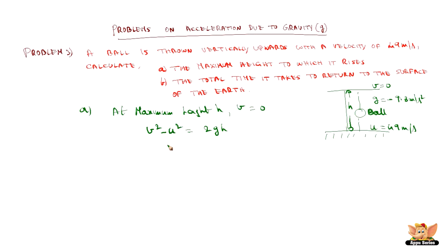We know v is zero and u is 49, so 49 squared equals minus 9.8 times 2h. Therefore, h equals minus 49 times 49 divided by minus 2 times 9.8. The negatives cancel, giving us 49 squared divided by 19.6, which equals 122.5. So the maximum height the ball rises to is 122.5 meters.